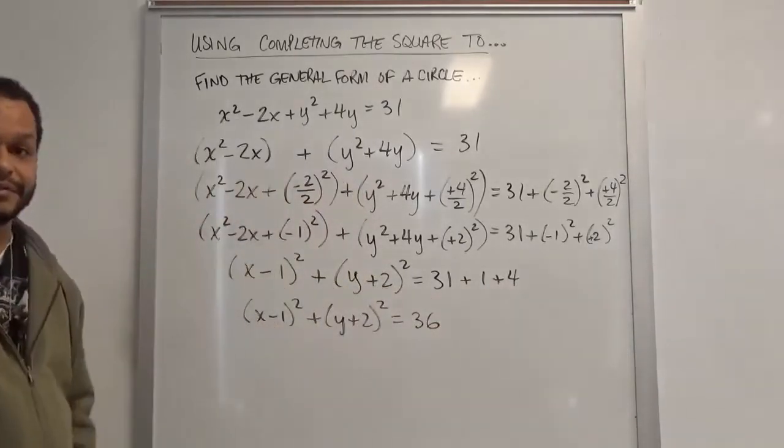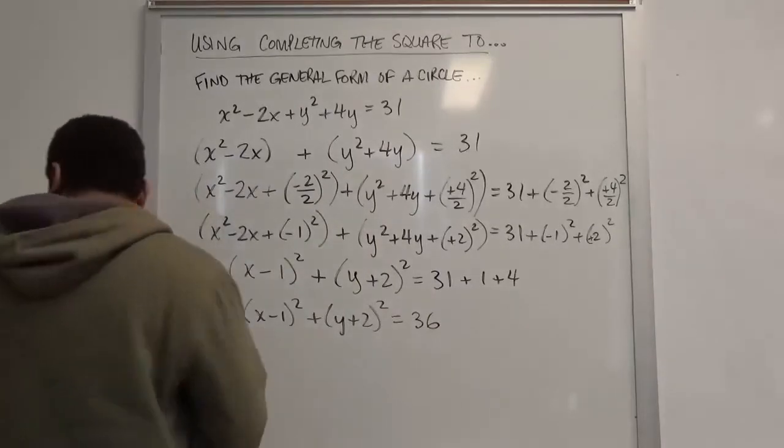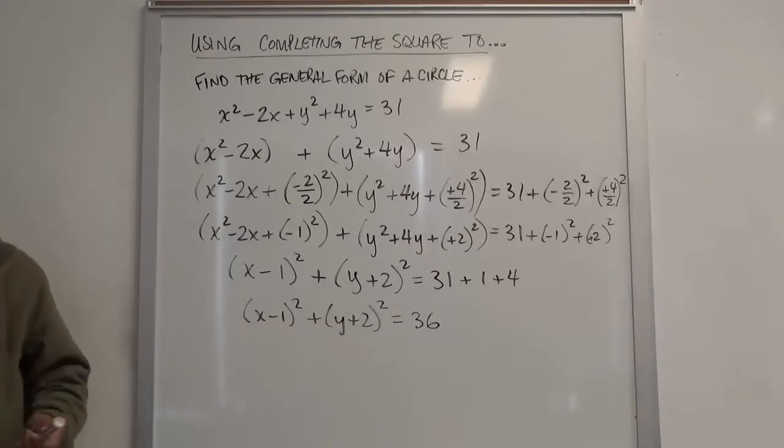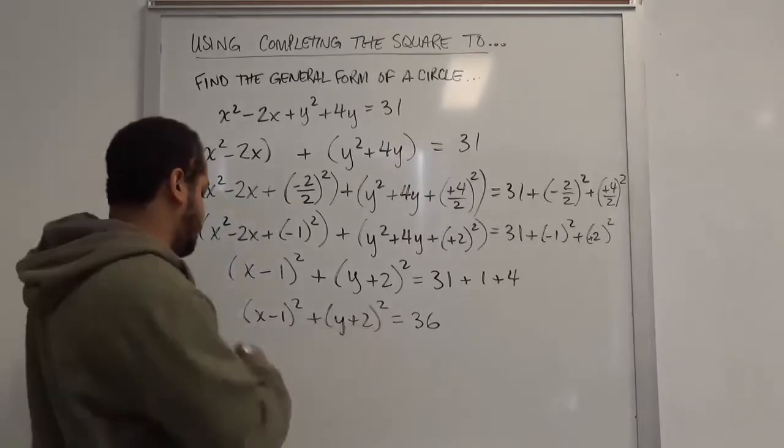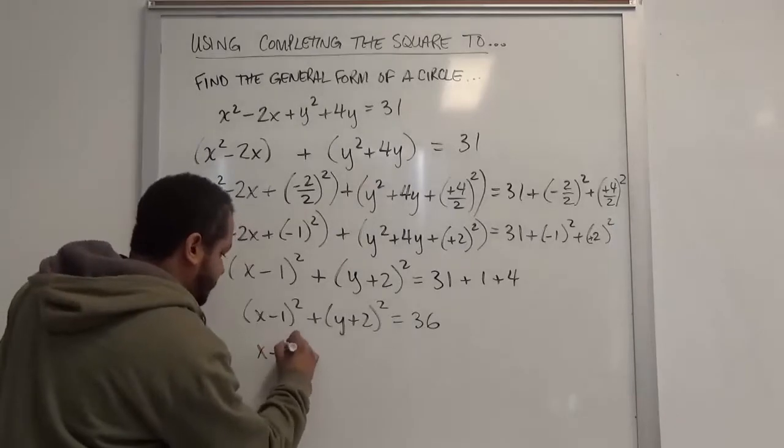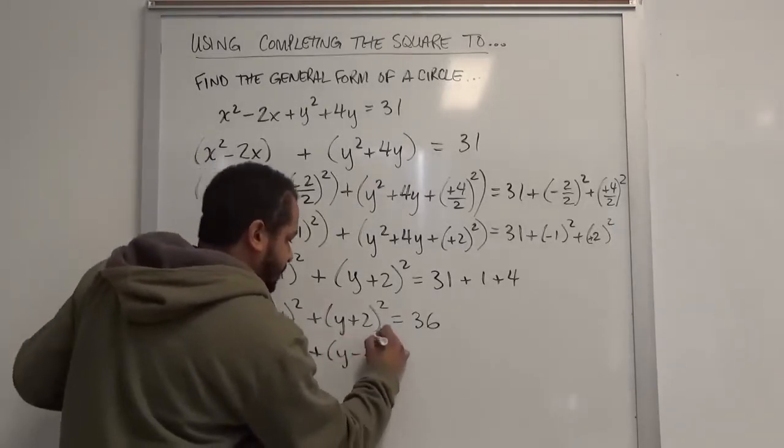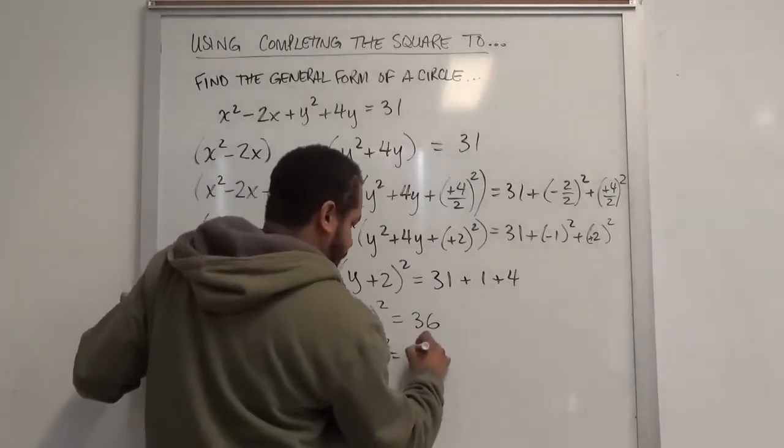Here we have our circle equation. Now the second component of this problem is asking us to write the equation in standard form, which we already see we have the standard form of the circle. The standard form equation is x minus h squared plus y minus k squared equals the r value squared.